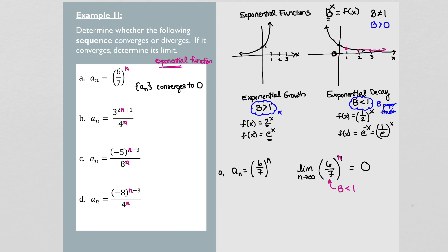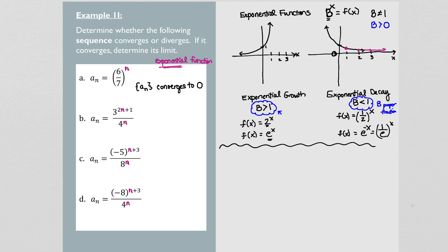Let's look at example B. I'm going to keep my exponential growth and exponential decay up there as a visual. Example B is a_n, the nth term in our sequence, equals 3^(2n+1) over 4^n. Again, we know it's an exponential function because of the placement of the variable up in the exponent. And we can actually simplify a little bit more — that 3^(2n+1) can be fixed up.